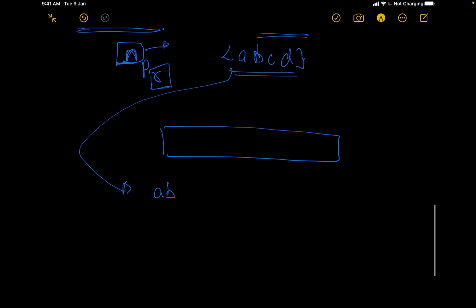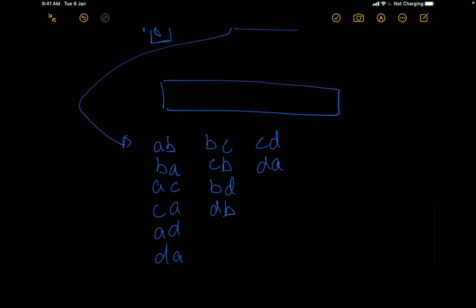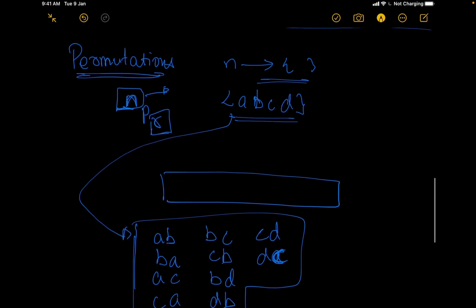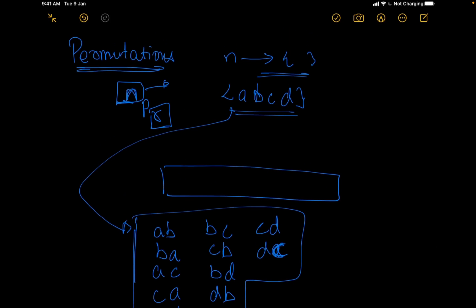In how many ways can we arrange two elements from {a, b, c, d}? We can have: a,b or b,a; a,c or c,a; a,d or d,a; b,c or c,b; b,d or d,b; c,d or d,c. So these are all the total number of ways in which we can choose two elements and arrange them — basically permuting two elements from the set of four elements. This is 4P2. Similarly, if we had a very big set — say n was 500 or 2000 — we would not be able to write down all possible permutations. So there needs to be a formula.